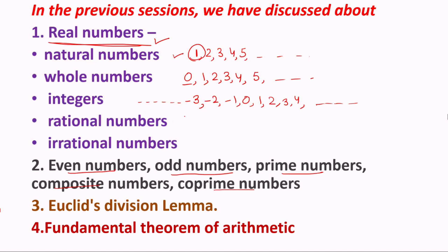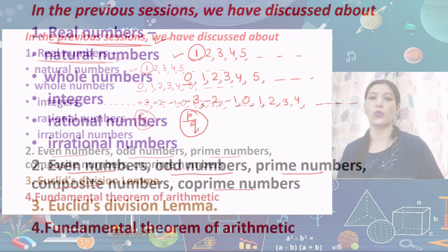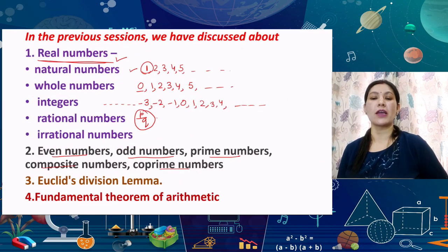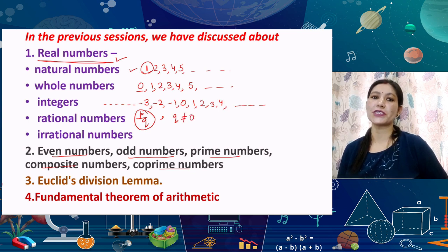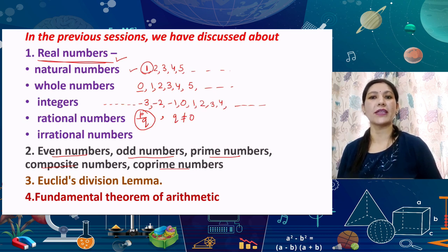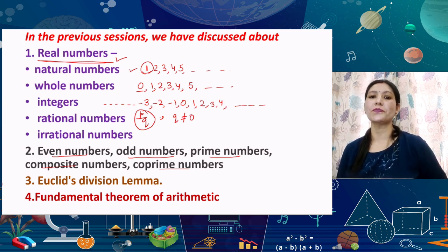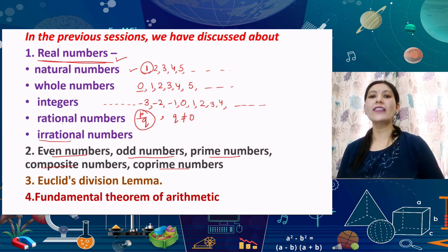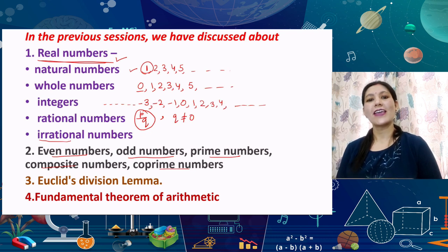Now, rational numbers: the numbers which can be written in the form of p upon q are known as rational numbers, where it is a must that the denominator is not equal to zero, because if the denominator is zero it becomes a non-defined number — infinity — which you will study in upcoming classes. Irrational numbers are all the numbers which are not rational.